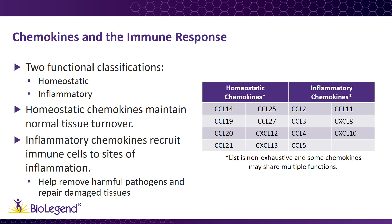Functionally, chemokines are divided into two groups: homeostatic and inflammatory. While homeostatic chemokines help recruit cells to maintain normal levels of cells in tissue turnover in healthy organisms, inflammatory chemokines recruit immune cells in response to a pathogen. These immune cells are recruited to sites of inflammation to help remove harmful pathogens and repair damaged tissue.